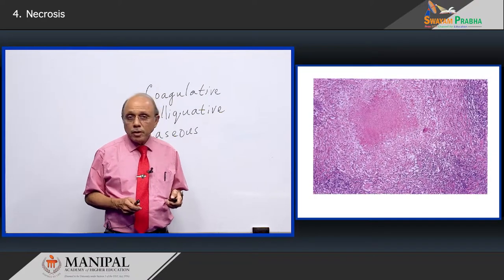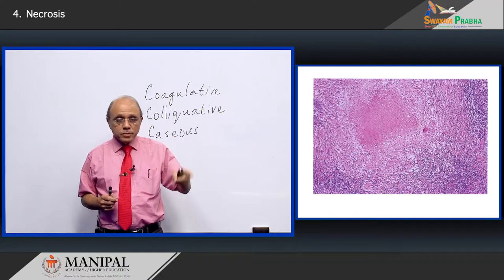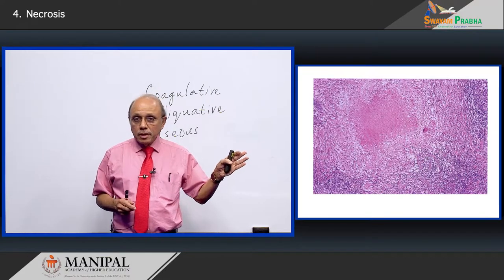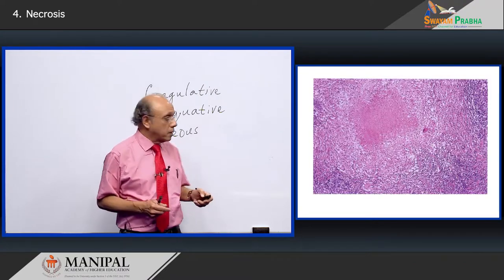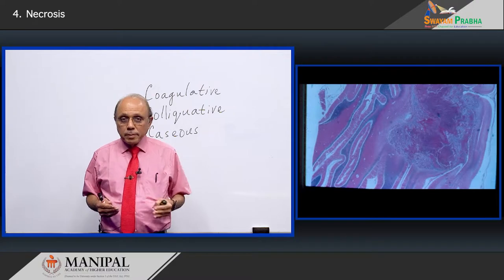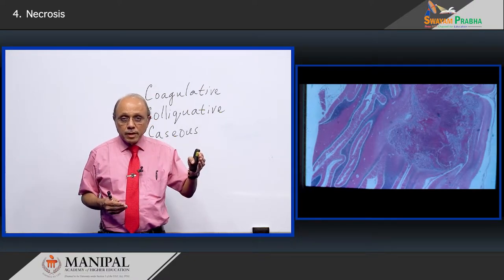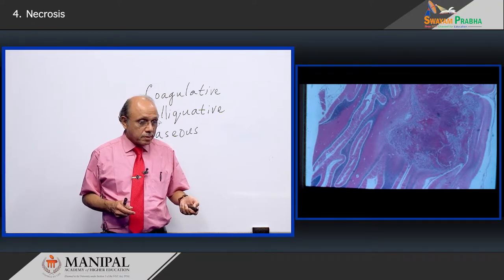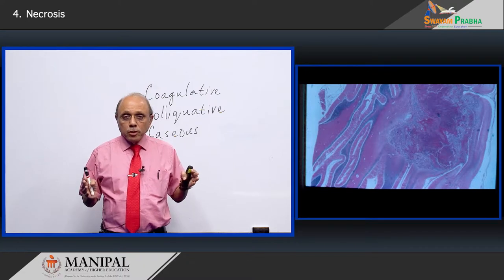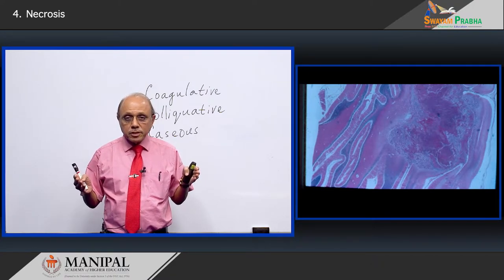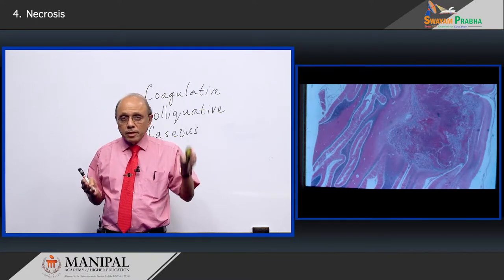Here is another picture of the same process of destruction caused by tuberculosis. You only see it as a homogeneous pink material — this is caseation necrosis, the third type of necrosis. This cerebellum is affected by tuberculosis, and you can see the tissue destruction in the area I have pointed to. So no matter what the organ is, wherever tuberculosis causes tissue destruction, that necrosis is caseous necrosis.